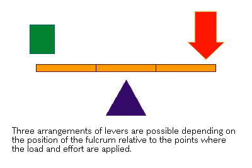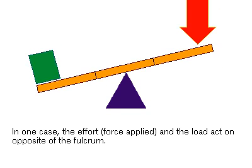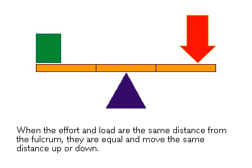There are three basic arrangements that will yield different kinds of leverage. In one case, the force and the load are on opposite sides of the fulcrum. When the applied force and the load are at equal distances from the fulcrum, the force applied will equal the force to the load. No leverage advantage is gained.